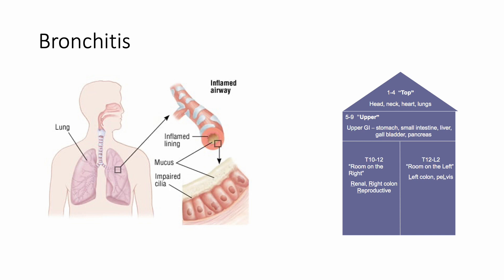Final example: bronchitis. Someone comes in coughing a lot, chest pain, sick for a couple days, coughing up phlegm. You do an OMM exam, feeling for rotation, side bending, flexion or extension abnormality, and you find something. What level is it going to be at? This is in the lungs — so T1 through T4. Hopefully you guys get every question right. If you have any questions, comment below.